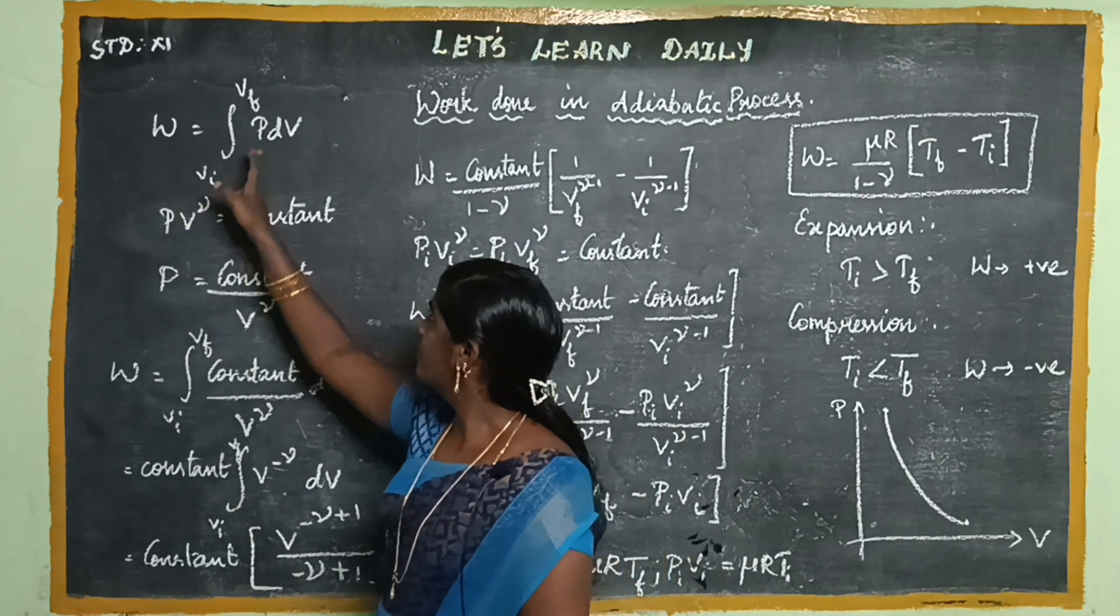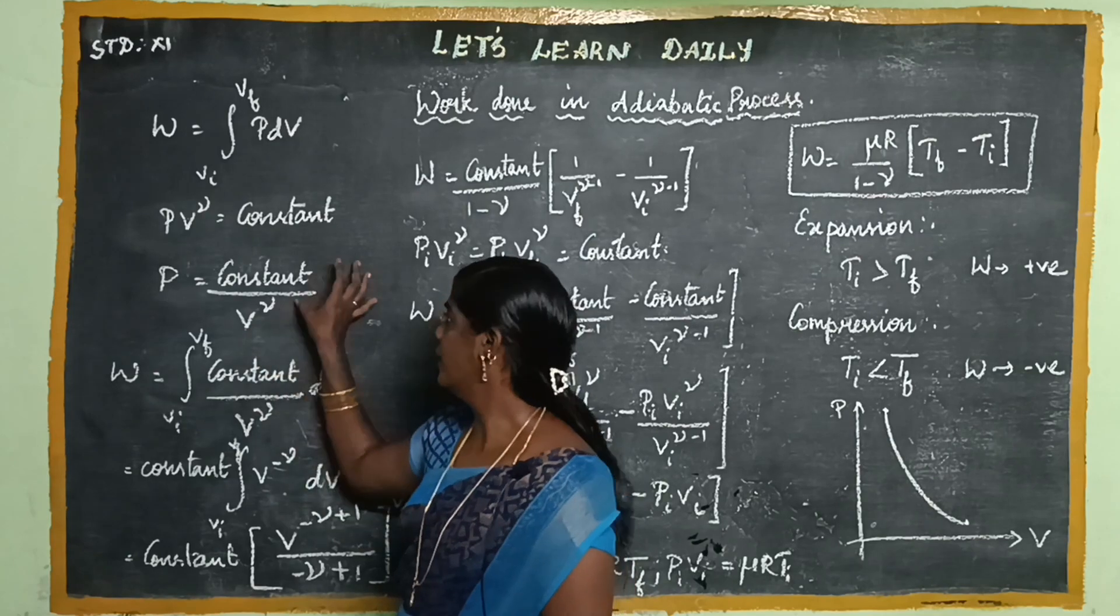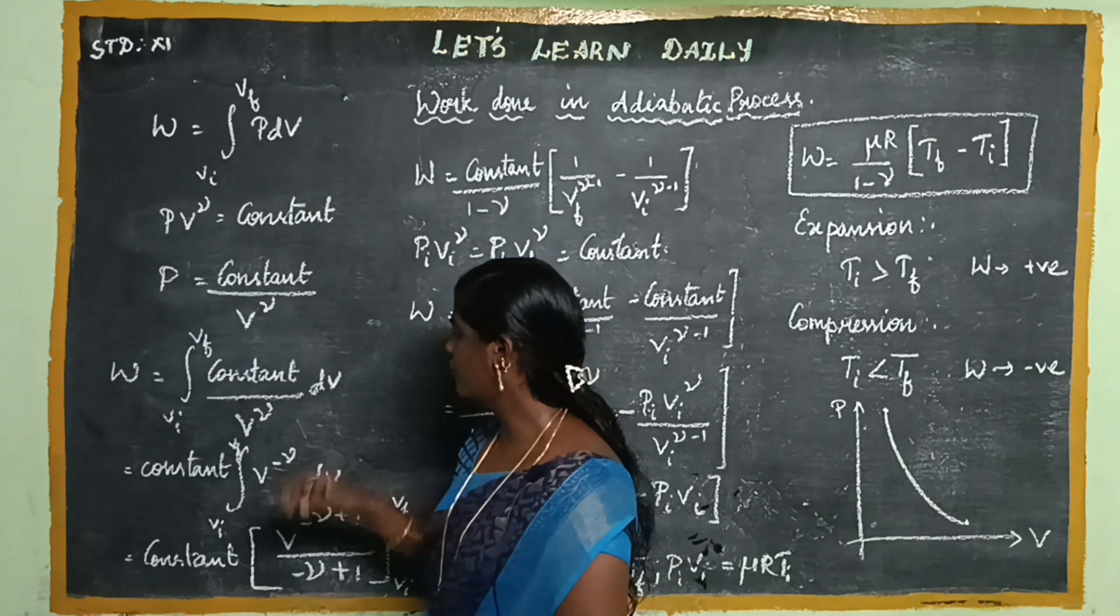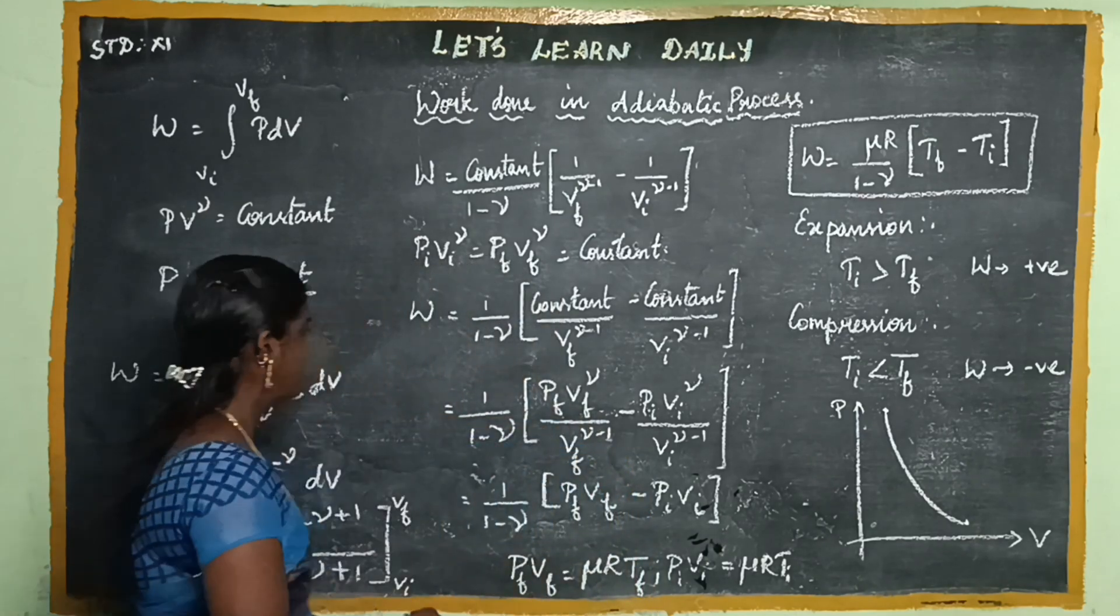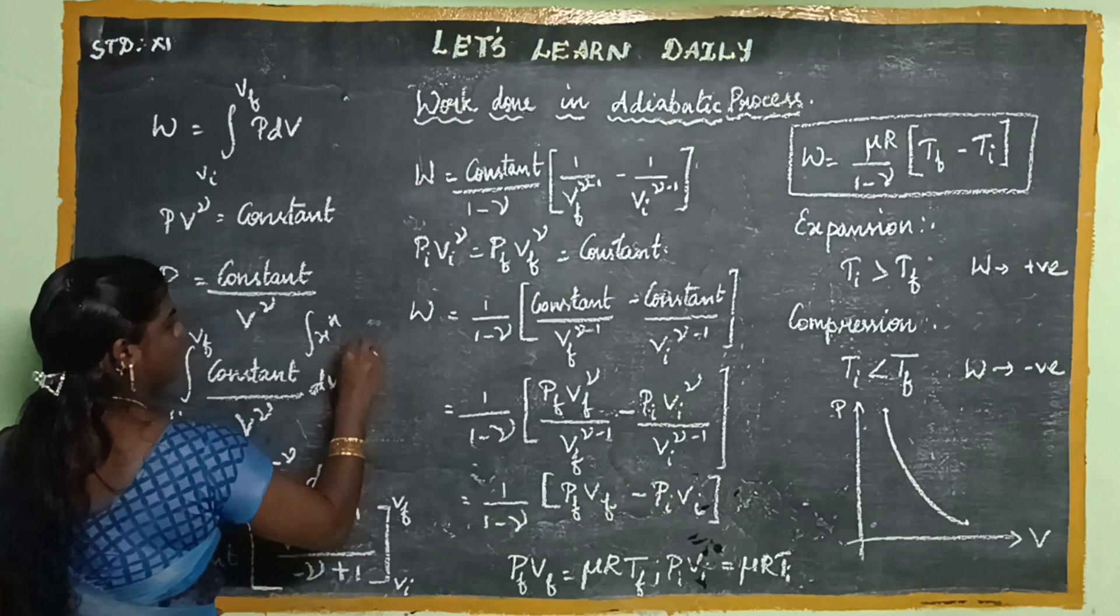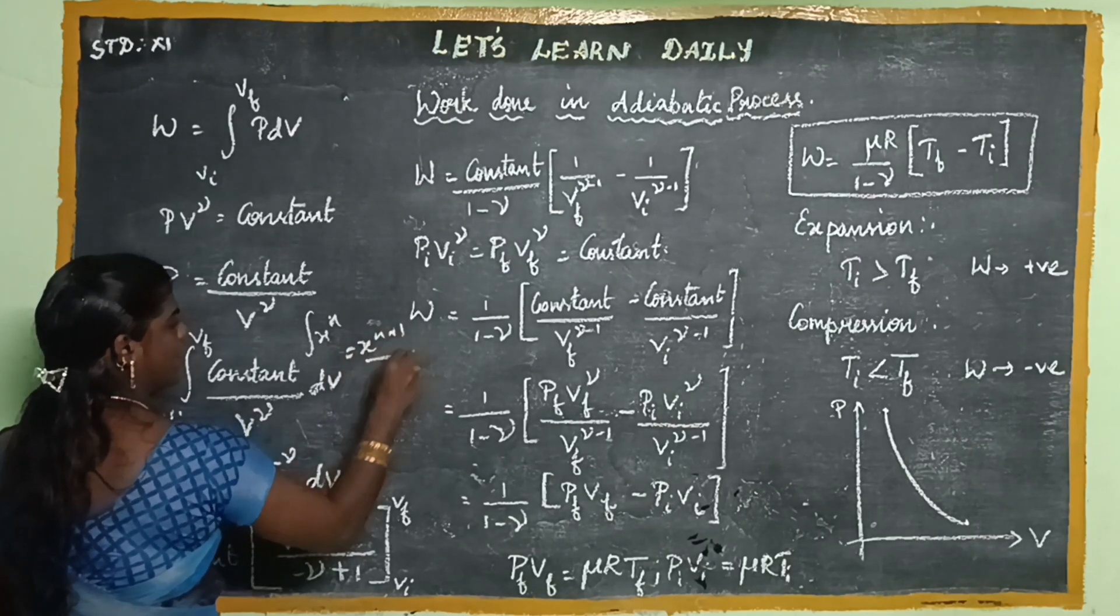So if you substitute the pressure value, then you substitute the constant by V^gamma into dV. You already know the x power n formula for integration. What is integral x^n formula? x^(n+1) divided by (n+1).